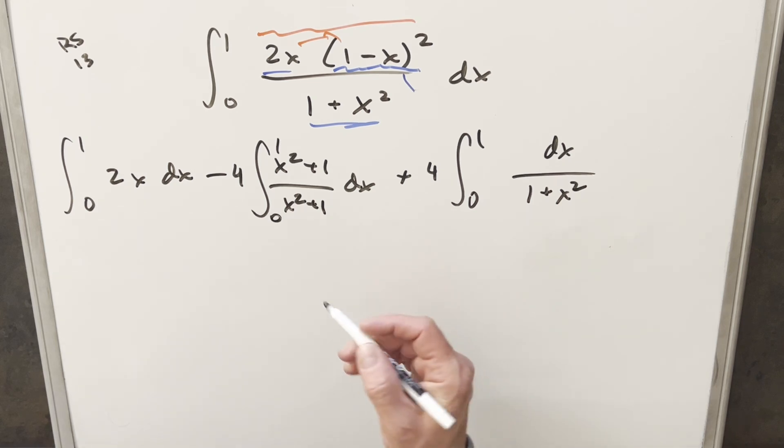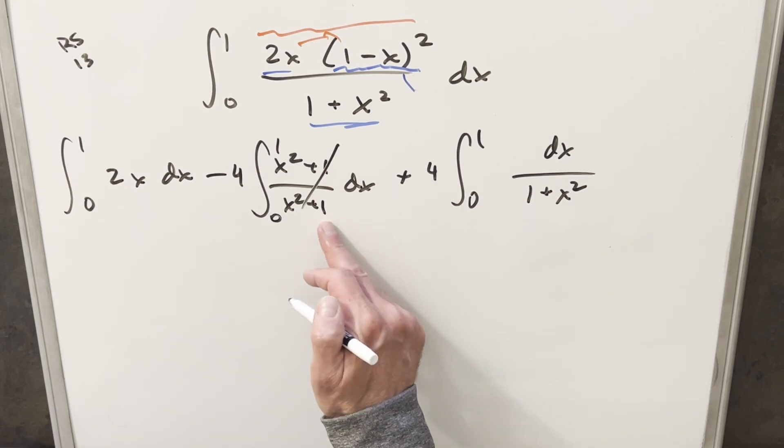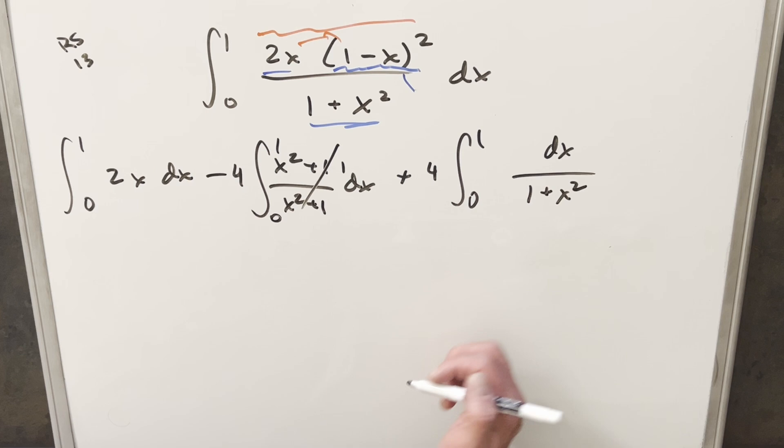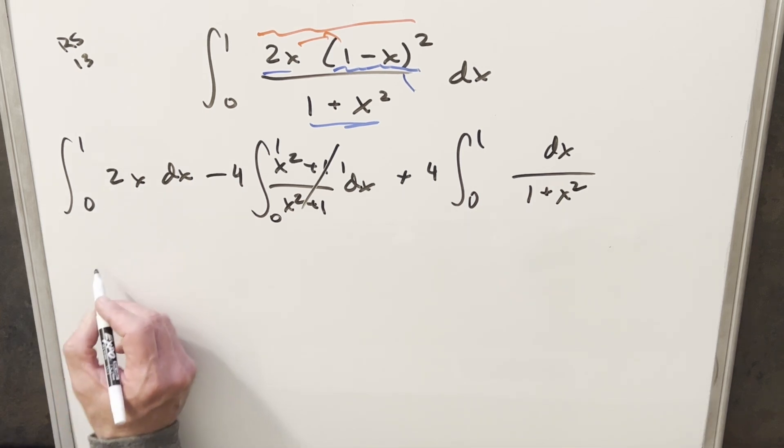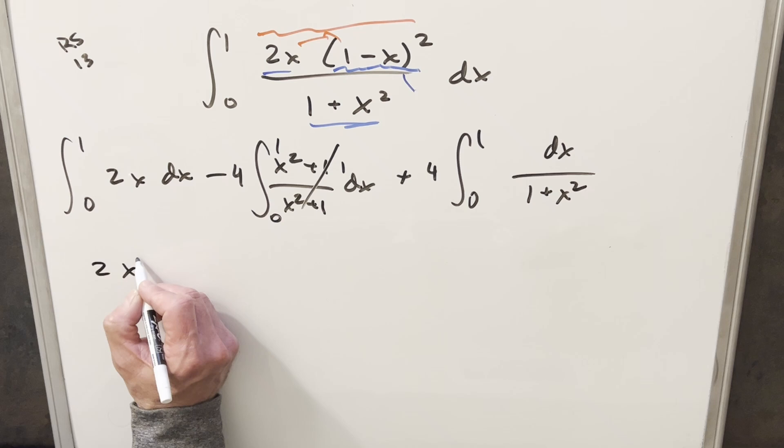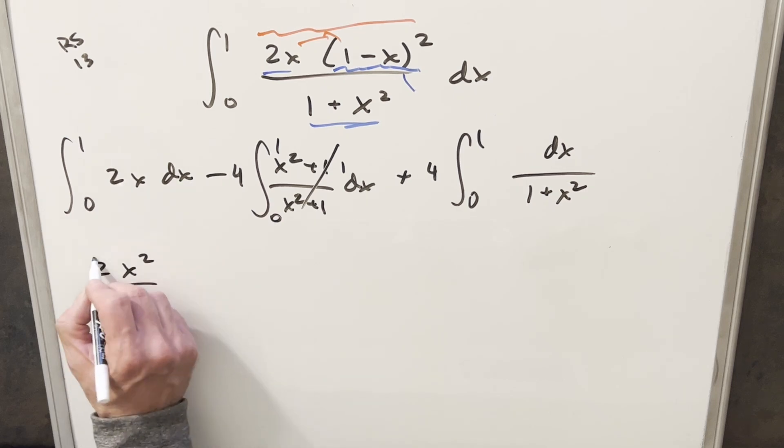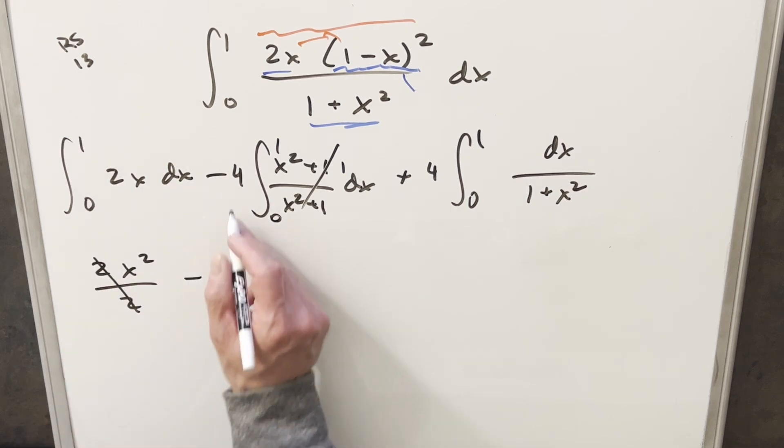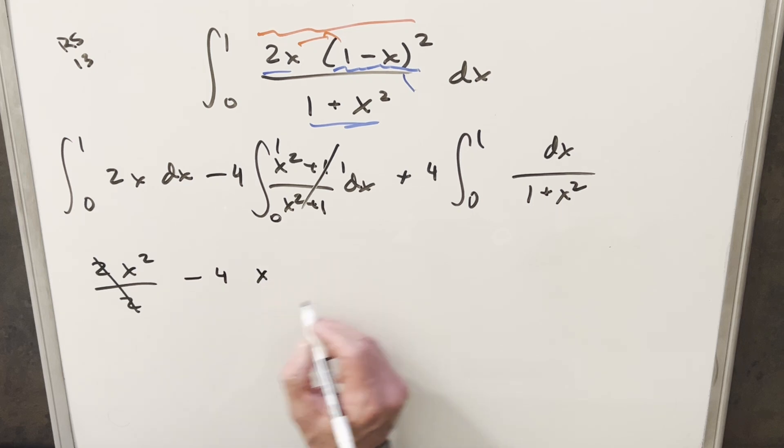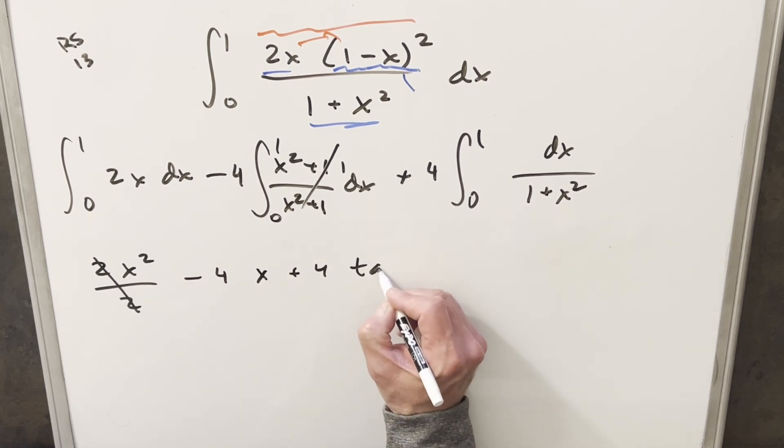So now what we're left with is just three easy integrals. x²+1 over x²+1 is going to cancel, and this whole integral is just going to be 1. Here, this is going to be our arctan formula. So let's just go ahead and integrate. First, we'll use power rule here. It's just going to become 2x² over 2. Cancel the 2s. Then here we have minus 4 integrating 1, we just get x. Here we have a plus 4 in front. This is just going to be arctan of x.